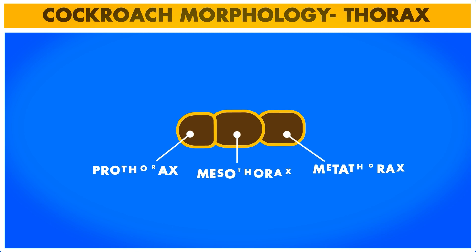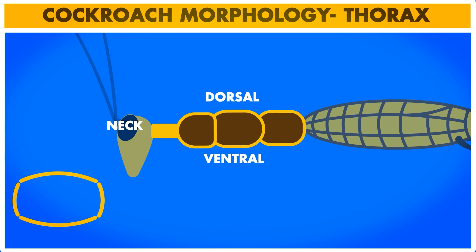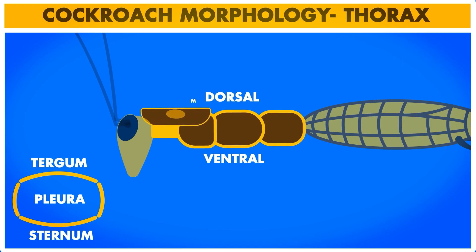A small neck arises from the prothorax which connects the head to the body. Each of the thoracic and abdominal segments is made up of four chitinous sclerites. The dorsal sclerite is called the tergum, the two lateral sclerites are called pleura, and the ventral sclerite is called the sternum. The tergum of the prothorax is the largest sclerite of the body and is called the pronotum. Its function is to protect the neck.